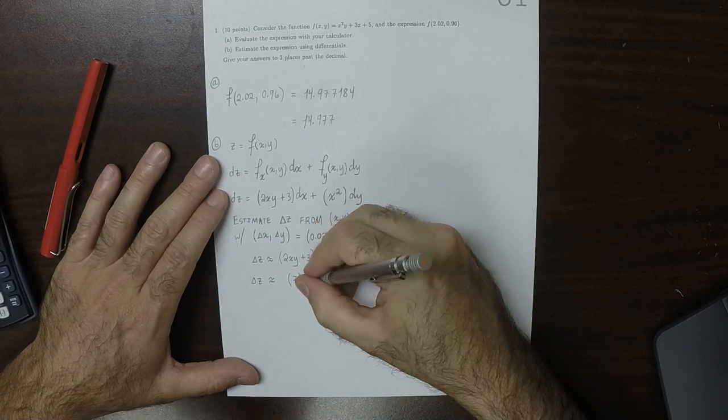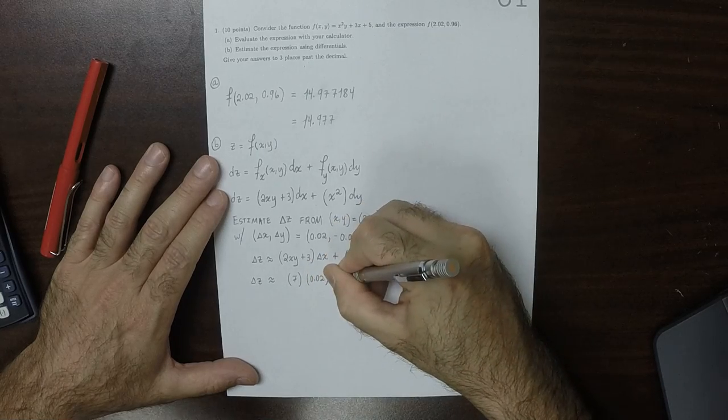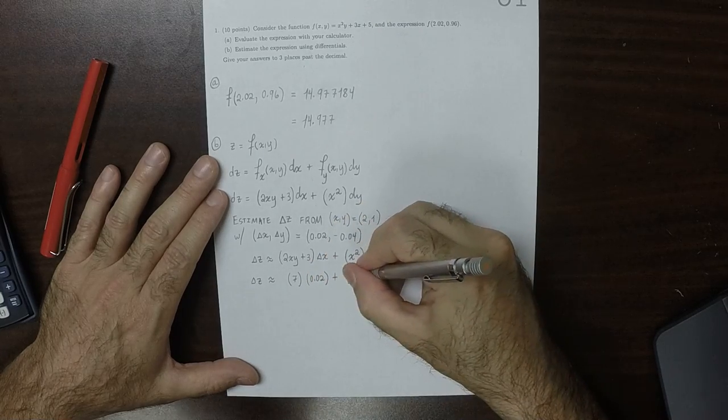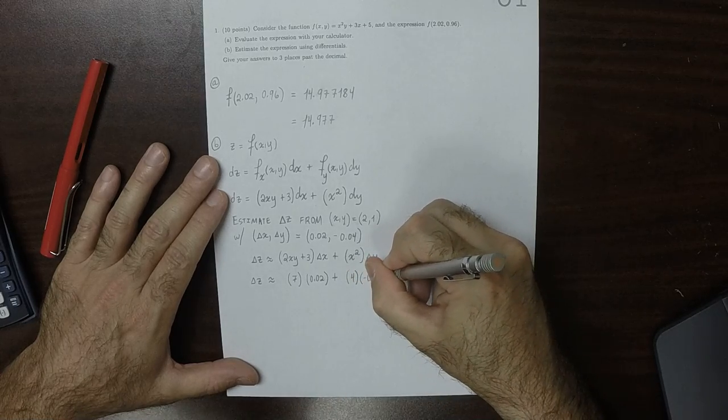And then delta x is 0.02 plus x squared, well, that's 4, multiplied by delta y, negative 0.04.